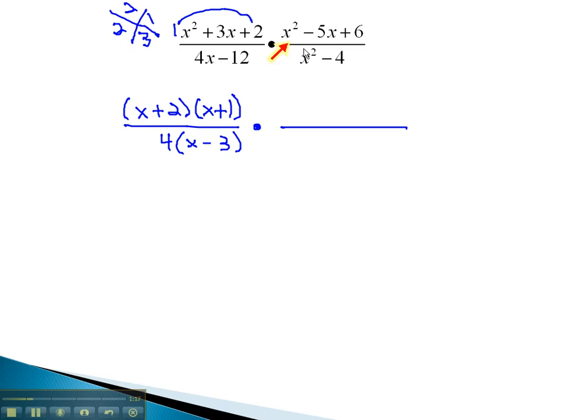In the second fraction, in the numerator, we notice with three terms, we must use the AC method, multiplying to 6 and adding to negative 5. This is possible with negative 2 and negative 3.